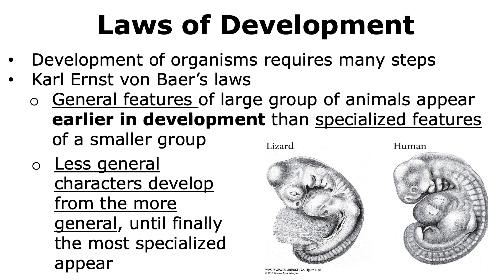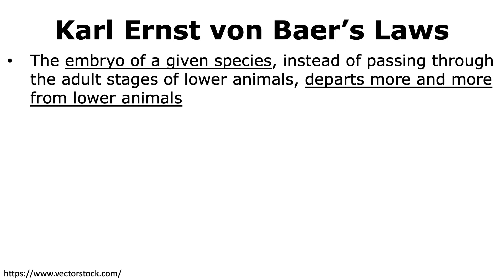The second law states that the less general characteristics develop from the more general until finally the most specialized appear. Going back to the example of humans and lizards, the fully formed human and lizard organisms have different features, and these specialized features will form only after the general features form.